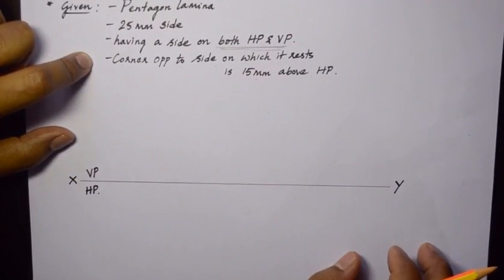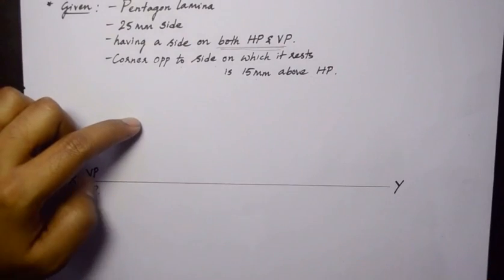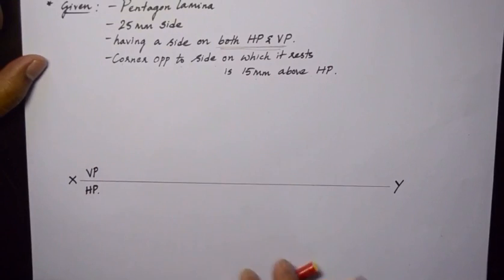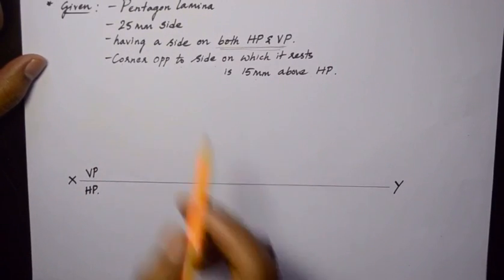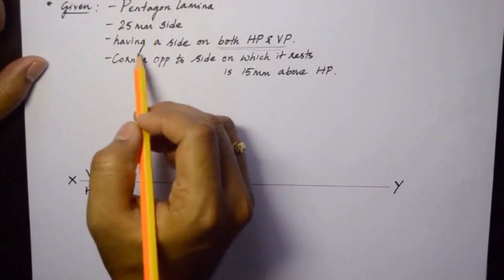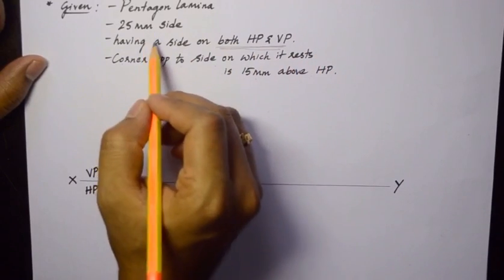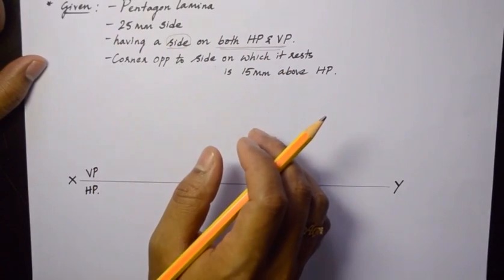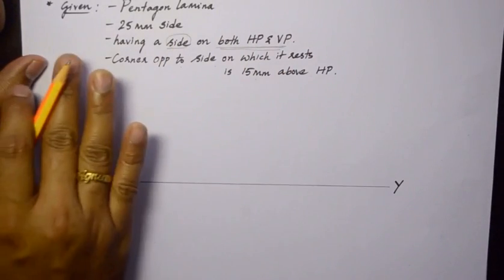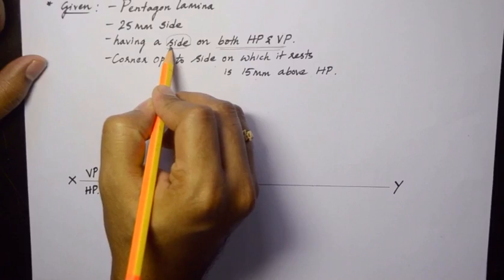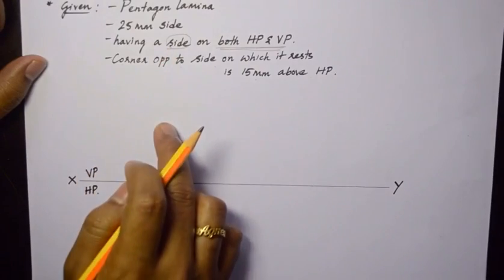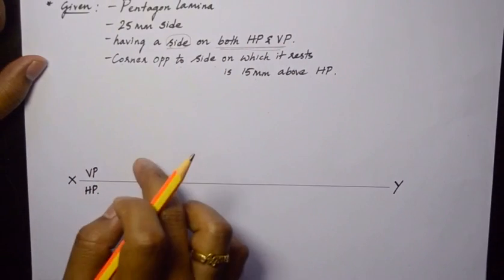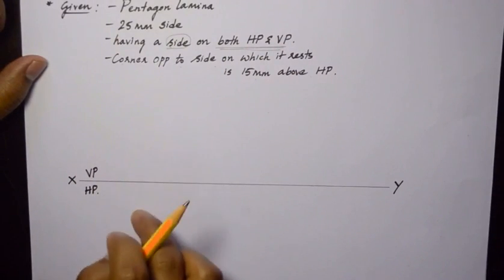In the first position we always ask the question: where to draw the plane figure — whether on VP or on HP. If you look at the laminar inclination or what the laminar is resting on, the laminar inclination is nowhere mentioned here. Instead it is resting on one of the sides. So now it is clear we need to draw the pentagon such that the side is on the left. But where to draw that plane figure, because the side is on HP as well as on VP? This condition will not directly tell us where to draw the plane figure.